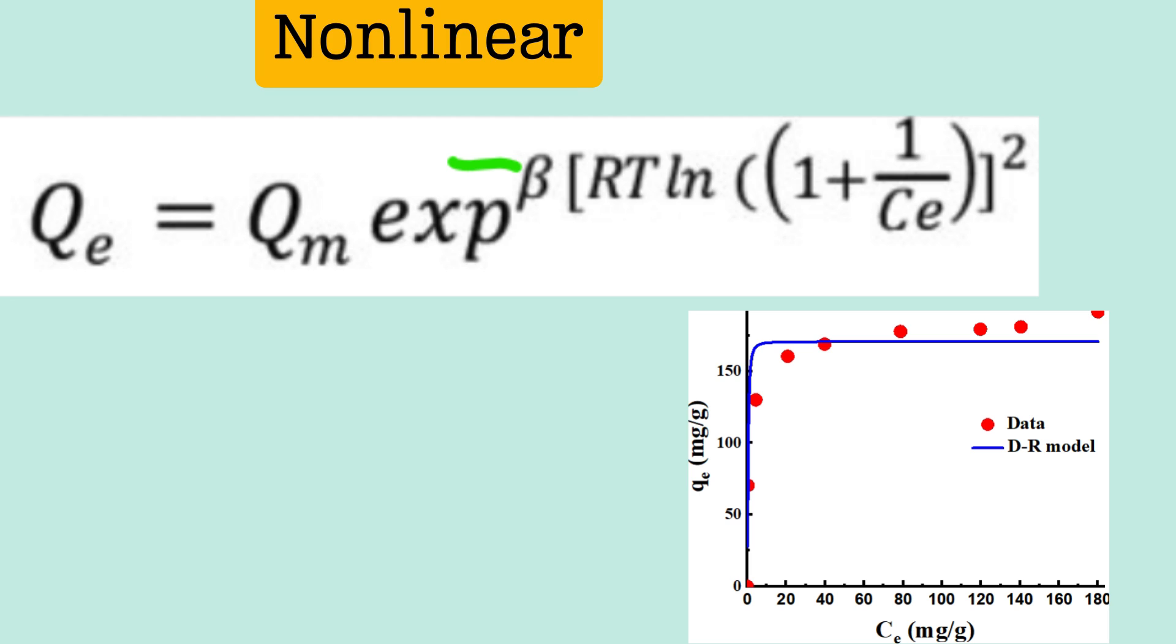Then comes non-linear Dubinin isotherm model, which is Q equal to Qm exponential minus beta RT ln bracket 1 plus 1 by CE bracket close then whole square. I have showed how to fit non-linear DR isotherm model using Origin Pro. You can have a look at this.